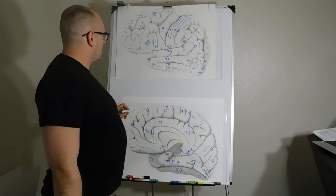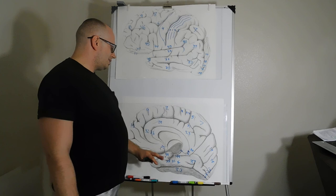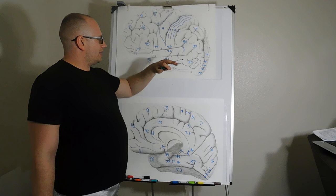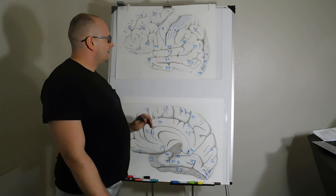Area 48 is in the hippocampal area, important for memory. Areas 49, 50, and 51 don't really exist in the human brain. Area 52 is near the insular cortex behind areas 41 and 42. Those are your Brodmann areas — I hope you enjoyed this video; we had to go over a lot of areas.